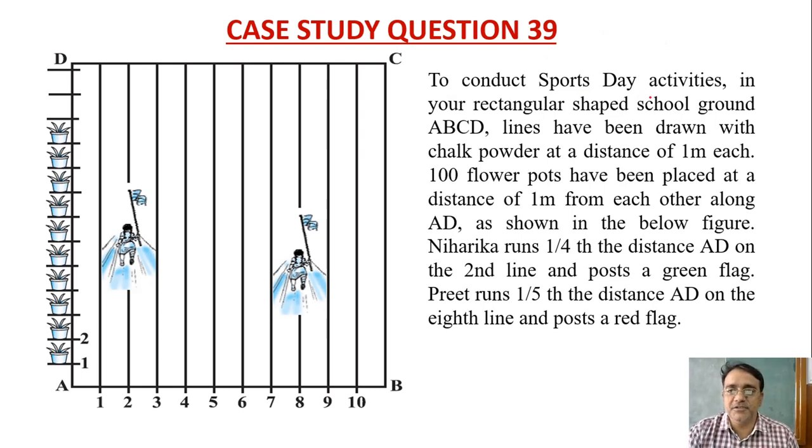To conduct sports day activities in your rectangular shaped school ground ABCD, lines have been drawn with chalk powder at a distance of one meter each. Hundred flower pots have been placed at a distance of one meter each other along AD. So this is the textbook question only as shown in below figure.